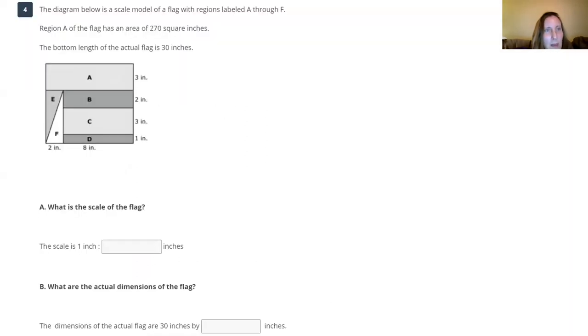Let me make this a slideshow so that I can do some writing here. Here we go. The diagram below is a scale model of a flag with regions labeled A through F. Region A of the flag has an area of 270 square inches.